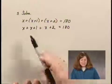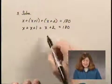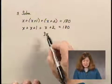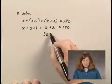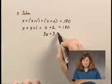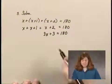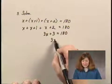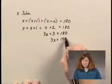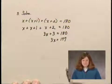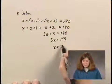We want to combine like terms. We have x plus x plus x, which is 3x, and then 1 plus 2, which is 3. And that equals 180. Subtracting 3 from both sides, we have 3x equals 177. Dividing both sides by 3, we have x equals 59.